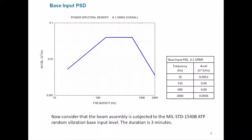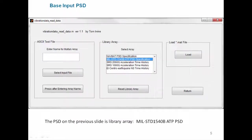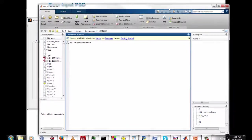We're going to do an example based on the MIL-Standard 1540B ATP power spectral density — G-squared per hertz versus frequency in hertz. We're going to apply this as a forced acceleration to a cantilever beam modeled as a continuous system, with a duration of three minutes.